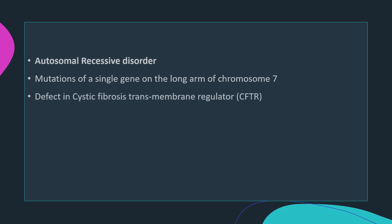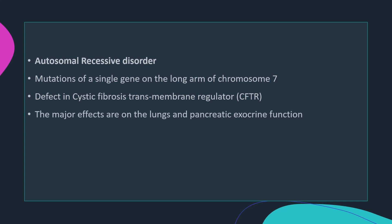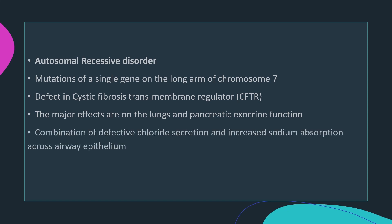The gene codes for a multifunctional protein called cystic fibrosis transmembrane regulator (CFTR), which is active in the membrane of epithelial cells. It operates as a chloride channel and regulates other ion channels. The defect leads to a combination of defective chloride secretion and increased sodium absorption across airway epithelium.